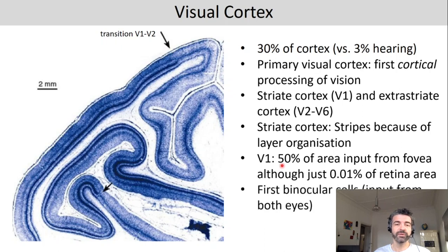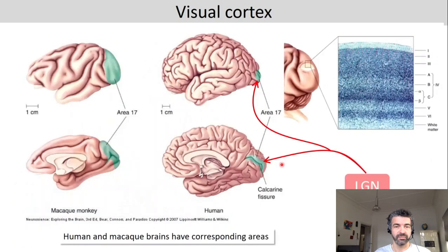The visual cortex is also the area in the cortex with the first binocular cells — those cells that get input from both eyes. In human and macaque brains there are corresponding areas; for example, the primary visual cortex in humans, area 17, can also be found in macaque monkeys.